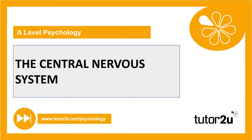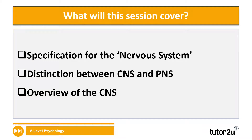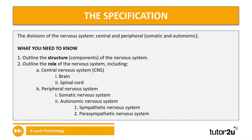Hi everybody, welcome to week one of your biopsychology catch-up series and we're going to get stuck in with the central nervous system. In this session you're going to cover the nervous system specification, so we'll start by having a look at what you definitely need to know. We'll distinguish between the CNS and the PNS — the central nervous system and the peripheral nervous system — and we'll also take a look at the central nervous system in more detail. So let's look at the specification first of all.